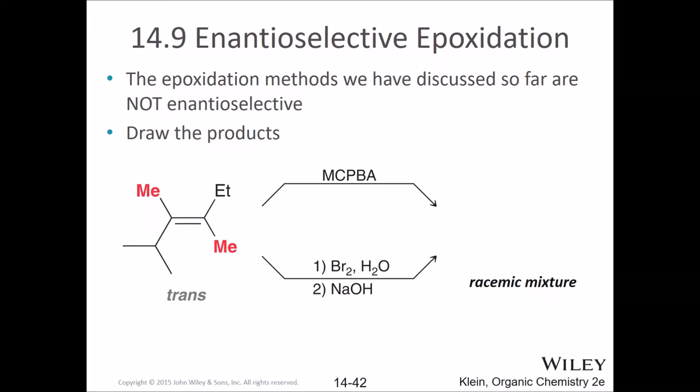We figured out before that we had the ability to take a double bond and make it an epoxide, which is something we can do a lot with. We'll be exploring what we can do with it later, but for now we figured out we can make an epoxide. The challenge, of course, is that we either make the epoxide above the plane or below the plane, and these are not the same thing — so this gives us a racemic mixture.